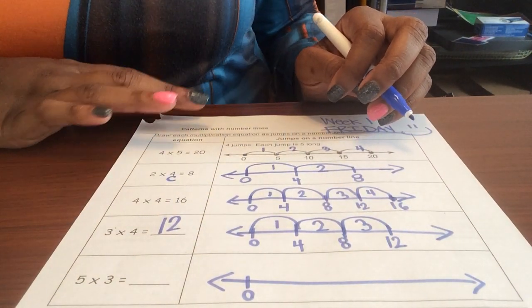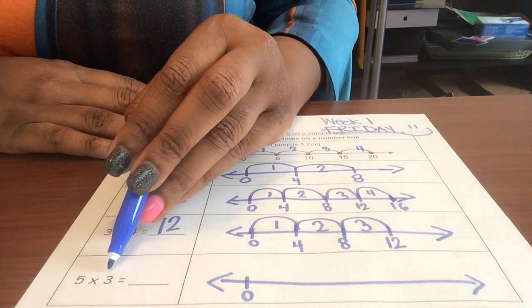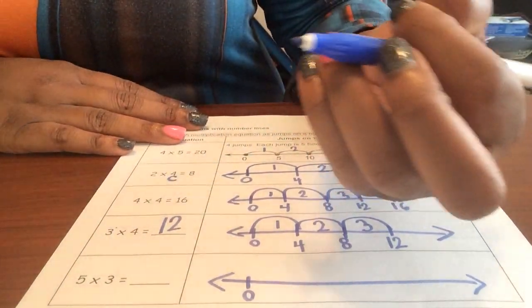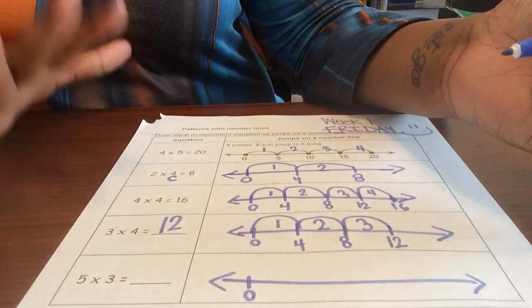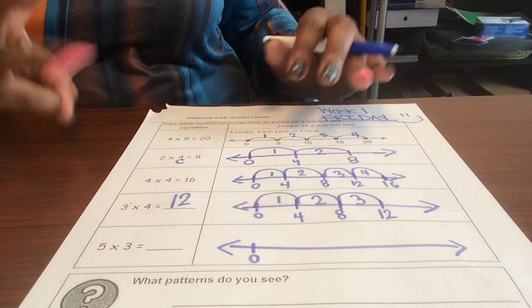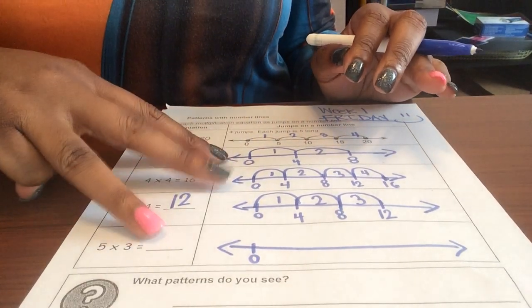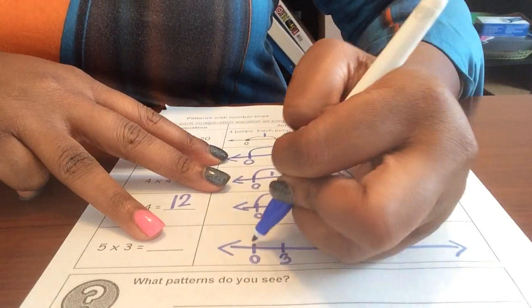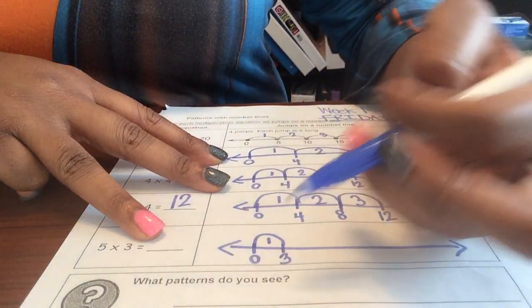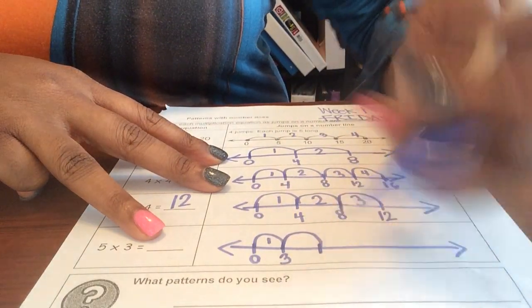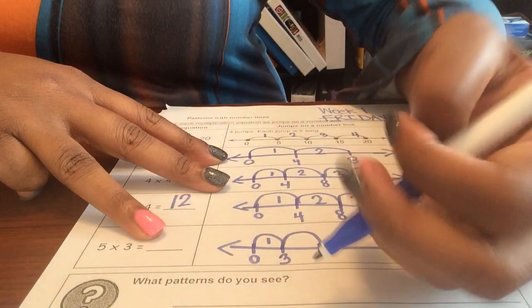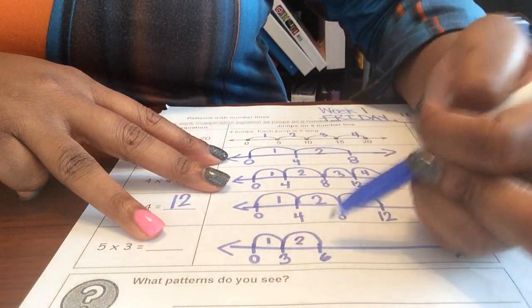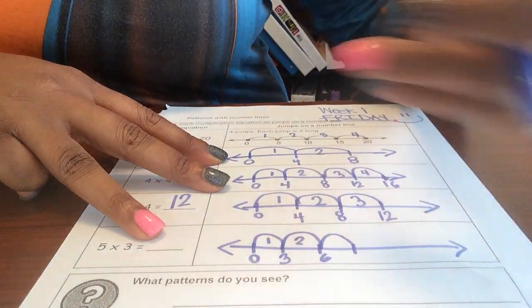I'm gonna do this next one a little bit differently. This one says five jumps of three, so I know I'm gonna make five jumps and I'm gonna count by three each time. So I'm gonna have my three fingers here. My first jump is to three, so that's one. My next jump: four, five, six, that's two. My next jump: seven, eight, nine, three jumps. I'm trying to get five jumps.